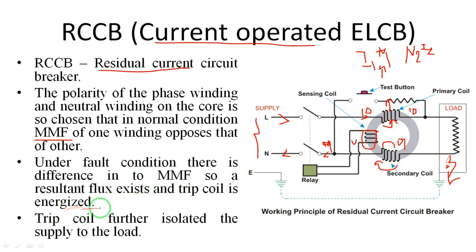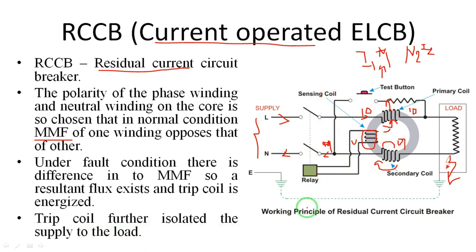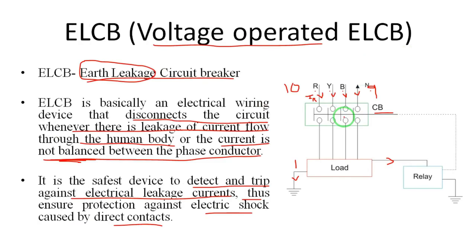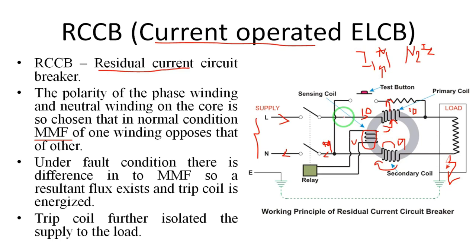Under fault conditions, the difference in MMF causes a resultant flux which energizes the trip coil. The resultant flux connected to the sensing coil induces a voltage, operating the relay, and the trip coil further isolates the supply to the load. This completes the working principle of the Residual Current Circuit Breaker. Thank you very much — if you have any doubts, please comment in the comment box.